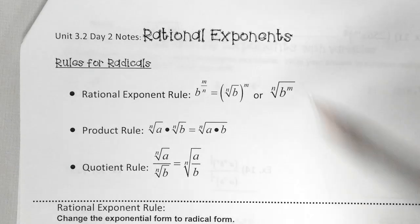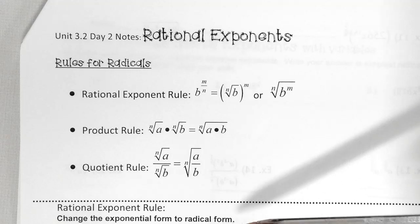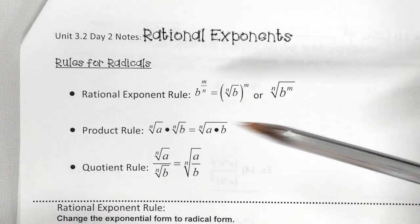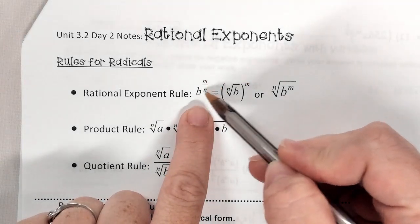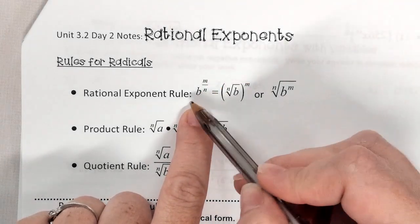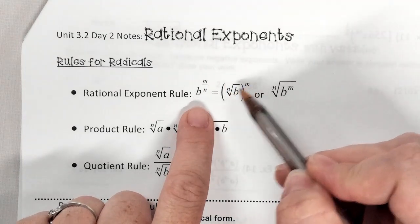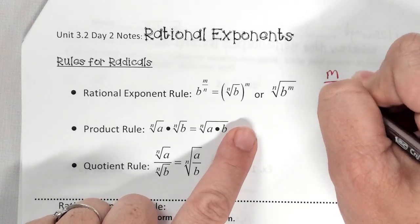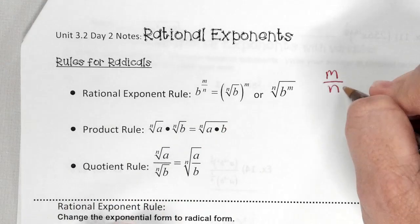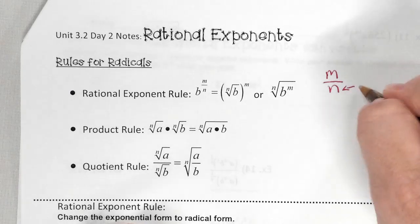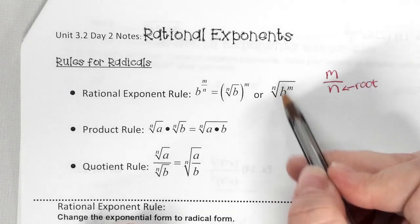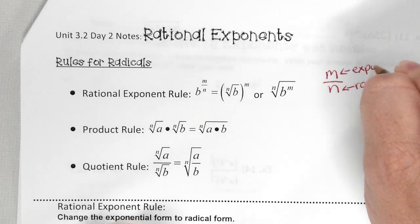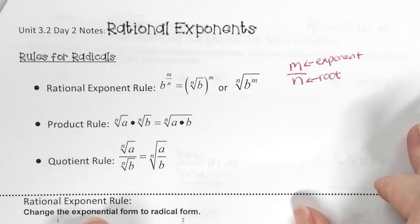We are doing rational exponents. There are rational exponent rules, and these rules help us simplify a lot of things. So we have the rational exponent rule: if you have an exponent that's a fraction, it's just another way of writing a radical with a root and an exponent. Think about trees — where are your roots? At the bottom. So n stands for your root — it's the root of your radical. That means m is your exponent.